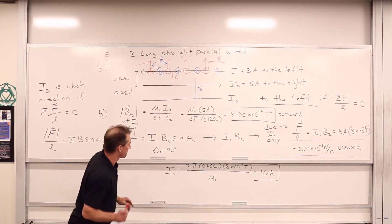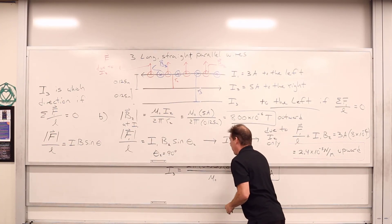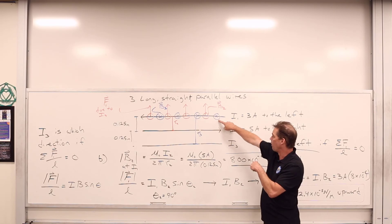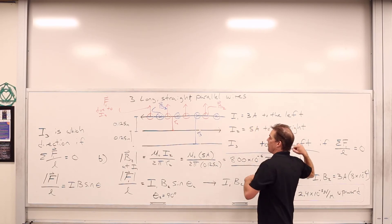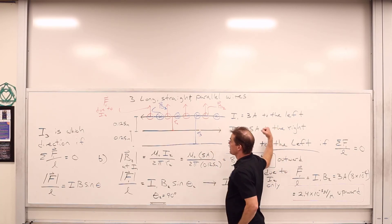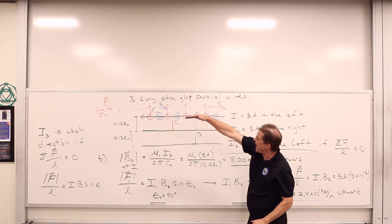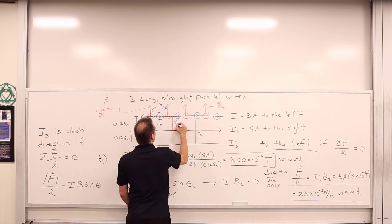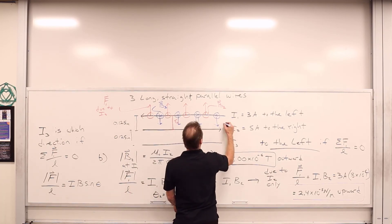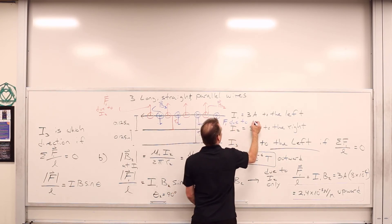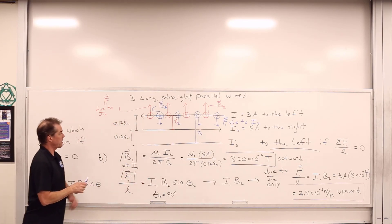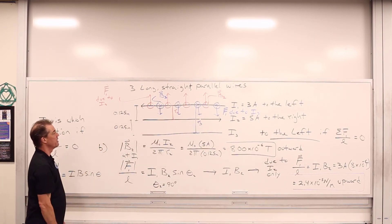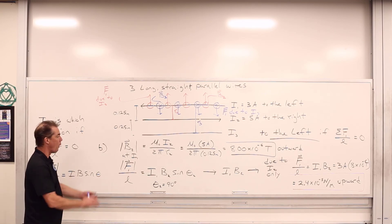Going back to verify: the magnetic field generated by wire three is into the board. Interacting with current carrying wire one — current going to the left, magnetic field into the board — the force across wire one due to B3 is downward. This force on I1 due to I3 has the same magnitude as the force due to I2 but in the opposite direction, since it's the same magnitude magnetic field interacting with the same current. Equal forces, opposite directions — they cancel each other out, and the net force is equal to zero. Done.